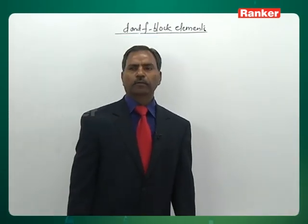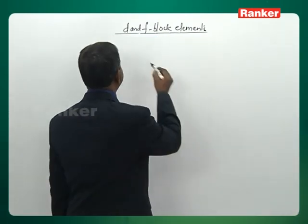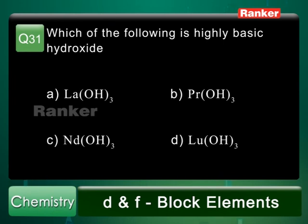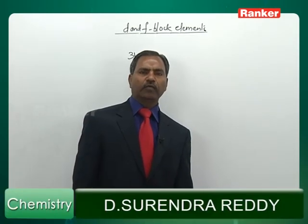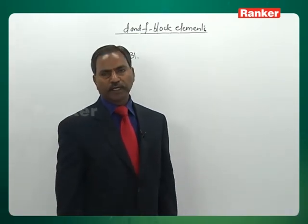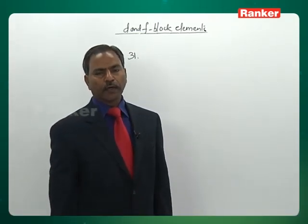Let us continue on question number thirty-one. We are given highly basic lanthanoid hydroxide. While discussing lanthanoid contraction, I said from left to right the ionic and atomic sizes are decreasing. For lanthanoids from left to right, the basicities of oxides and hydroxides gradually decrease as the ionic size is decreasing.